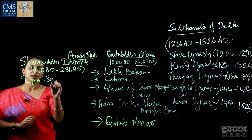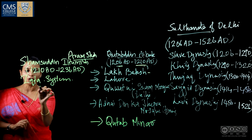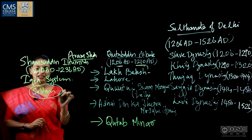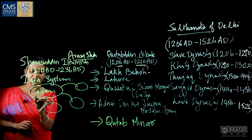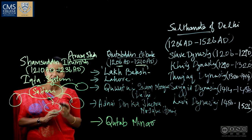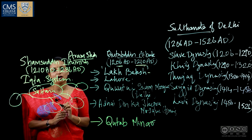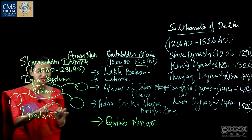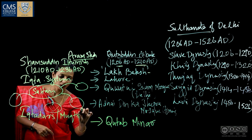The Iqta system was a land revenue system started by Iltimish. According to this system, all land belonged to the Sultan, who divided it into different provinces and assigned each province to governors. The governors in charge of these assigned lands were called Iqtadars, Muktis, or Walis.